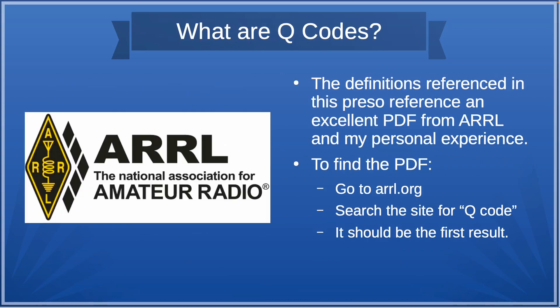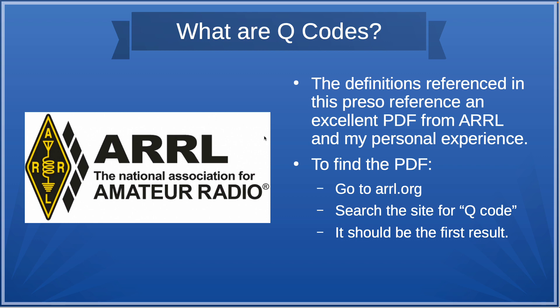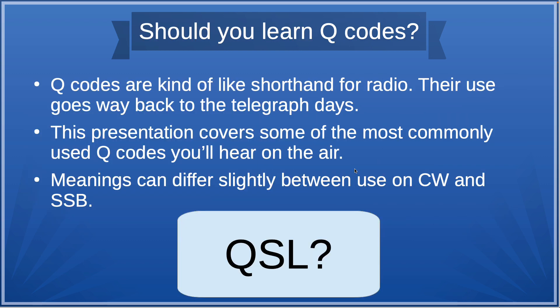I do want to jump into this with a couple of disclaimers. First of all, the definitions in this presentation are from an excellent PDF from the ARRL and from my personal experience. If you'd like to find that PDF, just go to ARRL.org and search the site for Q Code — it should be the very first result. Q codes are kind of like shorthand for radio. Their use goes way back to the telegraph days, with Morse code, way before any kind of sideband. This presentation covers some of the most commonly used Q codes that you'll hear on the air, or at least the ones that I hear on the air.